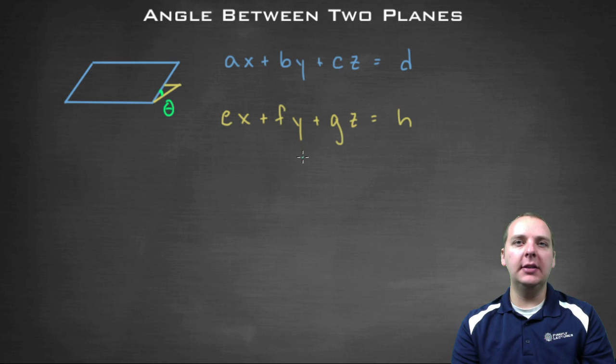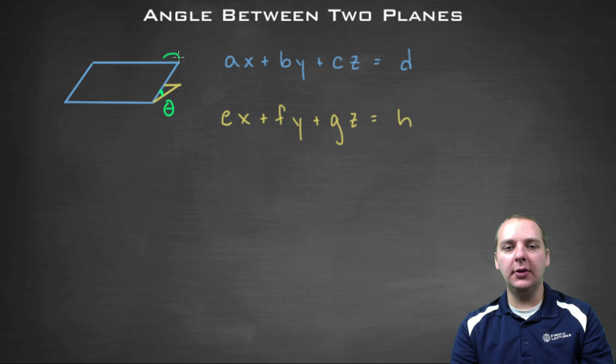And if you think back recently, we did study how to find the angle between two vectors, but I don't see any vectors here. These are planes, and I certainly don't know what vectors would point in these types of directions right here. I have no idea what those are.